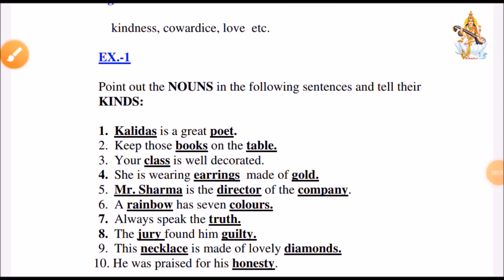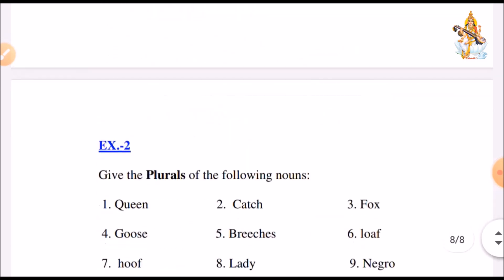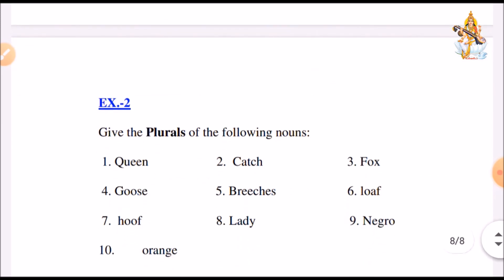Children, I think nouns are clear to you. And, you have also understood how to convert singular into plural nouns. Here there are two exercises. Here you have to tell the kinds of nouns. And, in the next exercise, you have to convert these words into plural nouns. Try to attempt these two exercises. You can find the answers below. Children, if you have enjoyed this video, like and share and also subscribe it. You can also write your comments in the comment box below. Thank you.